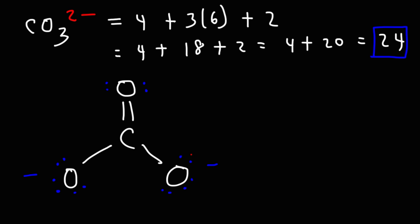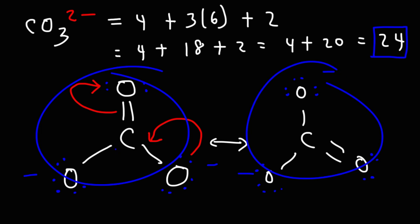So if we were to take a lone pair, use it to form a pi bond, break the pi bond here, and push 2 electrons on that oxygen, we can write at least 1 resonance structure of the carbonate ion. And it's going to look like this. So essentially, the double bond moved from one oxygen atom to the other.